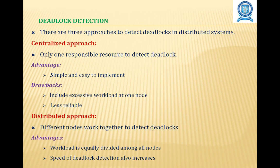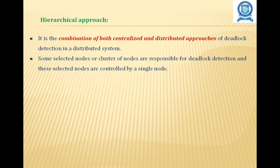The second approach is the distributed approach, where different nodes work together to detect deadlocks. There is no single point of failure as the workload is equally divided among all nodes, and the speed of deadlock detection also increases. The third approach is the hierarchical approach, which is the most advantageous. It is a combination of both centralized and distributed approaches. Some selected nodes or clusters of nodes are responsible for deadlock detection, and these selected nodes are controlled by a single node.